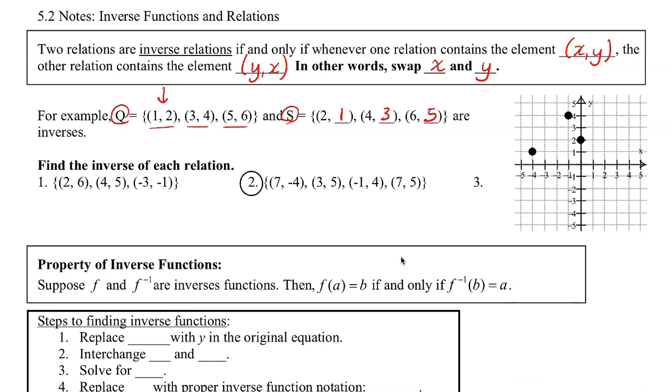You have some questions like find the inverse of each relation. On number one, all we have to do is switch these ordered pairs, and that will give us the inverse of the relation. Number two is a try this, so you can try that on your own.